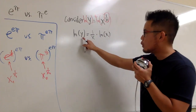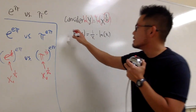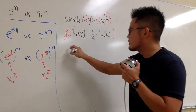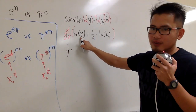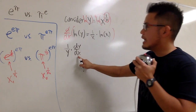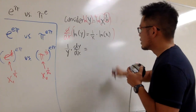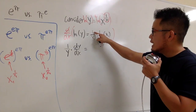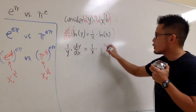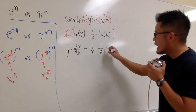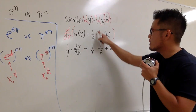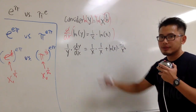Now we take the derivative. Since y is not isolated, we use implicit differentiation. The derivative of ln y is (1/y) times dy/dx. On the right-hand side this is the product of two functions, so we use the product rule: keep the first function 1-over-x and multiply by the derivative of the second, which is 1-over-x, then add the second function ln x multiplied by the derivative of the first, which is negative 1-over-x squared.